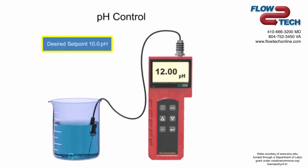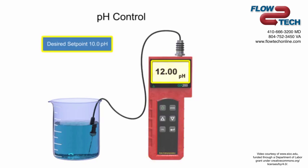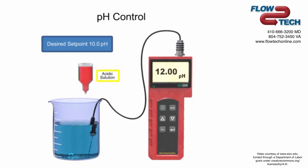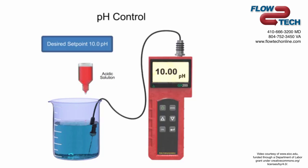To maintain the desired pH level in a solution, a sensor is used to measure the pH value. If the pH is not at the desired setpoint, a reagent is applied to the solution. When a high alkaline level is detected, an acid is added to decrease the pH level. When a low alkaline level is detected, a base is added to increase the pH level.